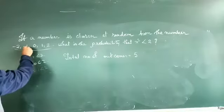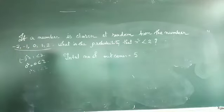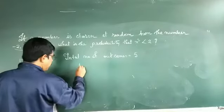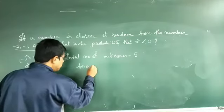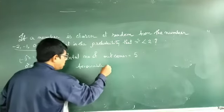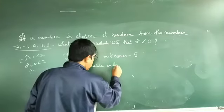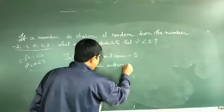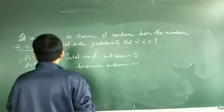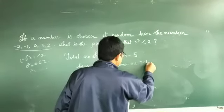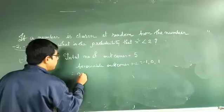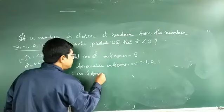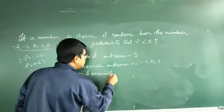So these are the 3 outcomes. Minus 1, 0 and 1 are the favorable outcomes. So the favorable outcomes are minus 1, 0 and 1. Therefore, the number of favorable outcomes is 3.